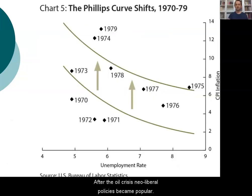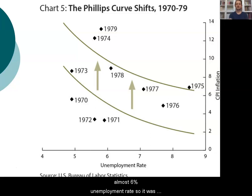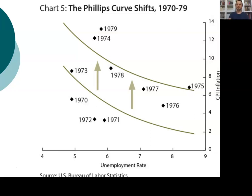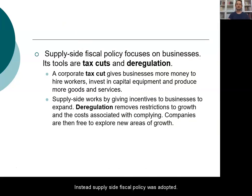As you can see here, in 1973 the unemployment rate in the U.S. was 5% and the inflation rate was approximately 8%. Then in 1974, unemployment jumped to almost 6% while inflation also rose to 12%. This simultaneous increase — a shift of the Phillips curve — is what we call stagflation. As a result, demand-oriented Keynesian policies were abandoned and supply-side fiscal policy was adopted.